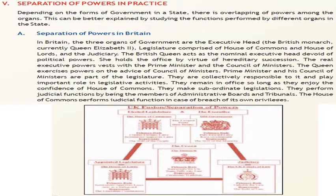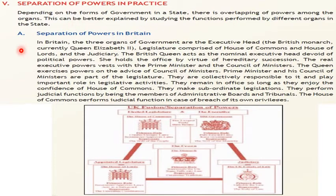Depending on the forms of the government in a state, there is an overlapping of powers among the organs. This can be better explained by studying the functions performed by different organs in the state. Let us first start with the separation of powers in Britain.